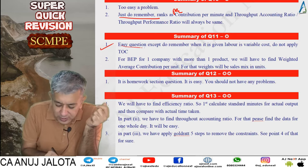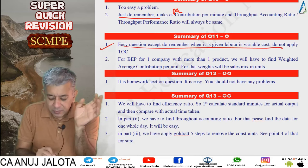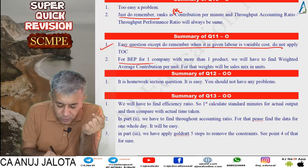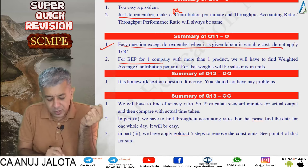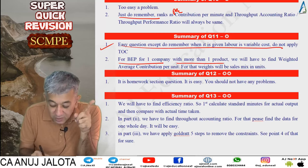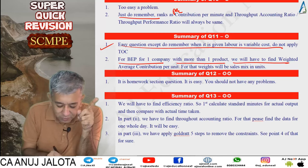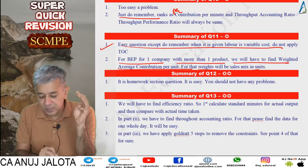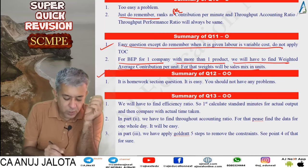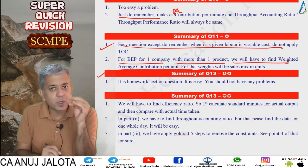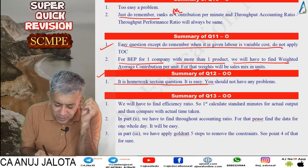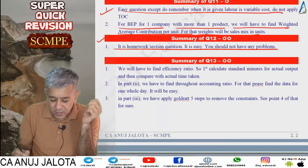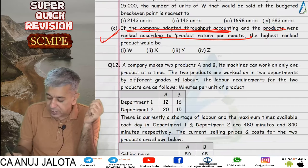Remember: when it is given that labor is a variable cost, do not apply TOC. For break-even point for a company with more than one product, find weighted average contribution per unit — weights will be sales mix in units. Question 12 was a homework question, not very tough — you'll find it easy once you start doing it.